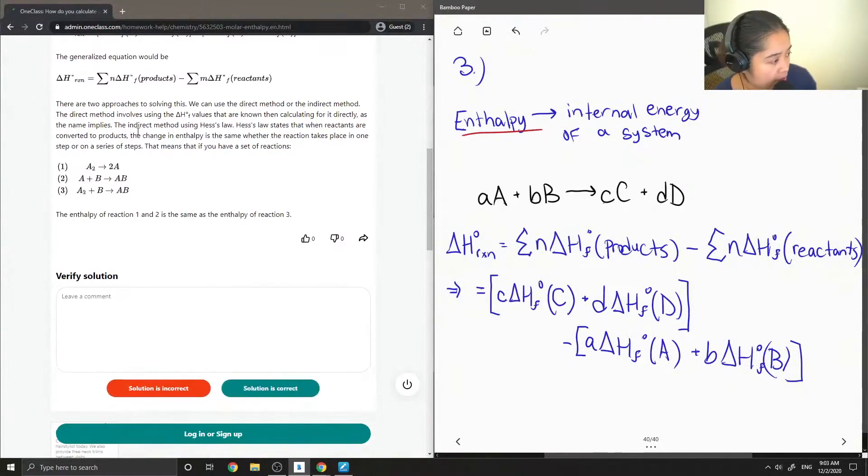I showed the example for the direct method. They also mentioned the indirect method using Hess's law. Hess's law states that when reactants are converted to products, the change in enthalpy is the same, whether the reaction takes place in one step or in a series of steps. This means that if you have a set of reactions, they show how one would form a compound AB just by giving A2 plus B. So they break it up into different steps.